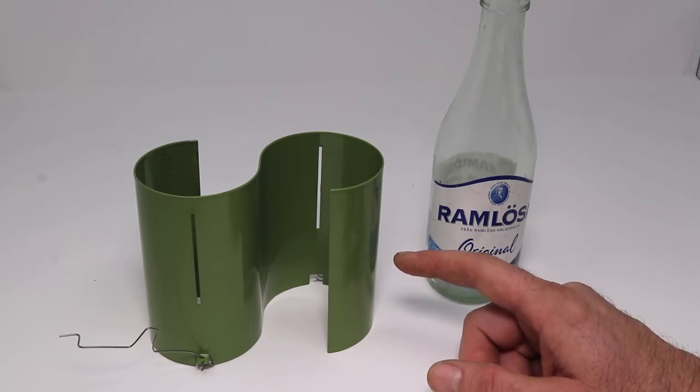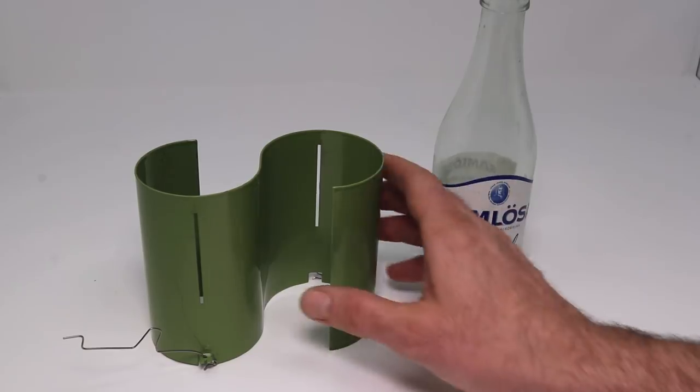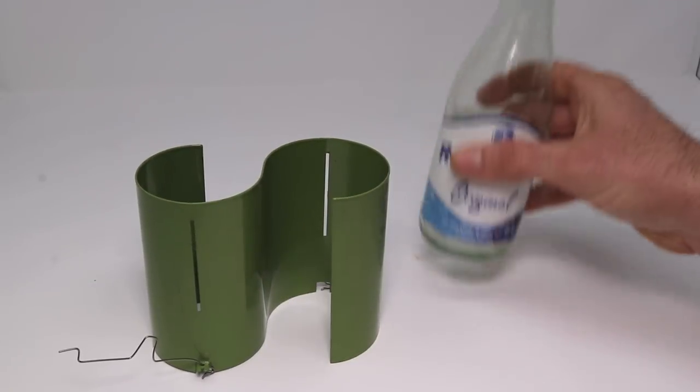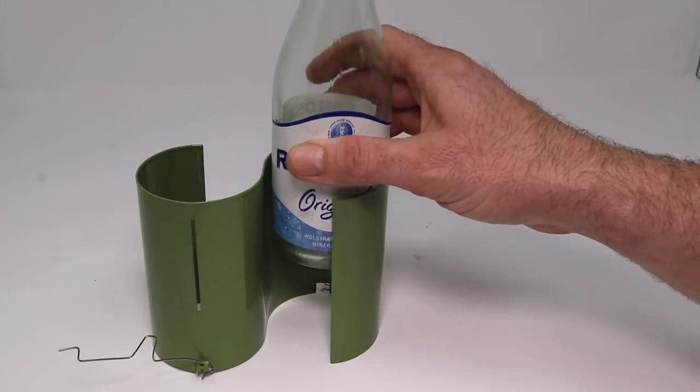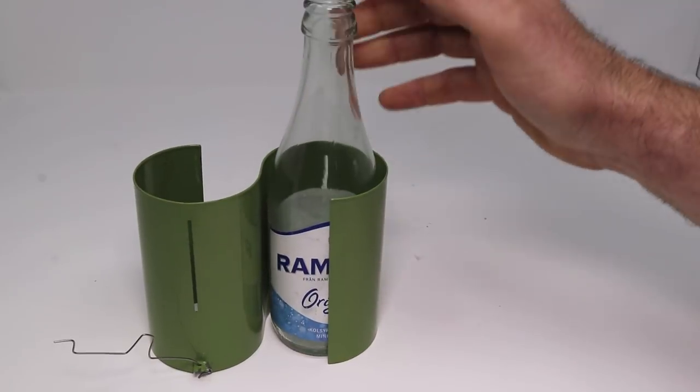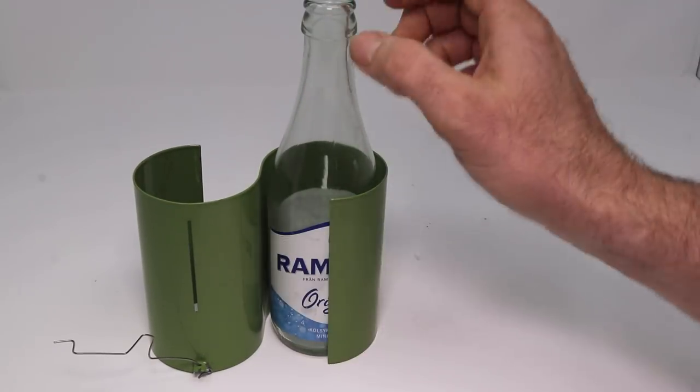This is a deadfall style mousetrap. It consists of a piece of metal bent into an S shape and this fits two bottles that act as the weight. Bottles fit in there like that, are held up with the trigger system and some bait. When the mouse comes in and removes the bait, they come slamming down. You can get two mice in one night.